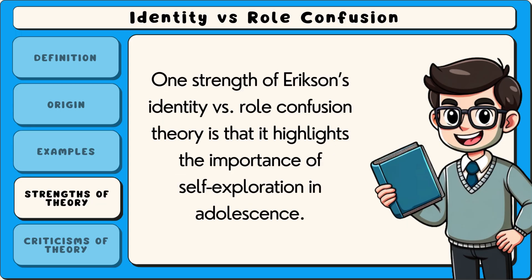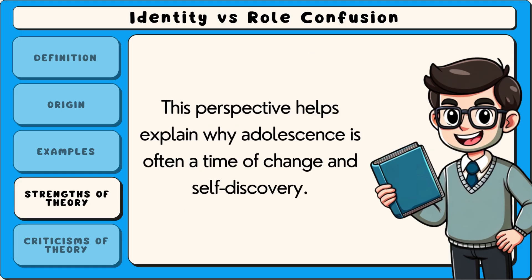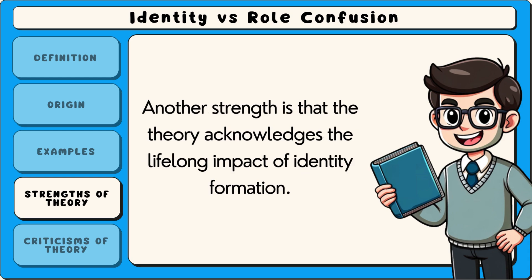One strength of Erikson's identity versus role confusion theory is that it highlights the importance of self-exploration in adolescence. By emphasising the need for young people to explore different roles and values, the theory provides a framework for understanding how individuals develop a strong sense of identity. This perspective helps explain why adolescence is often a time of change and self-discovery.